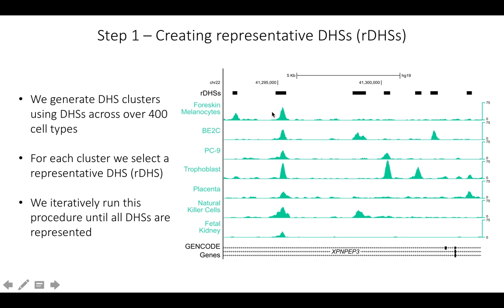For over 400 cell types with DNase-seq data, we clustered all these regions together and picked a representative DHS, or DNase Hypersensitivity Site, to represent each one of these clusters. These are the black DHSs shown at the top. We did this for human across 400 cell types and for over 60 cell types in mouse.